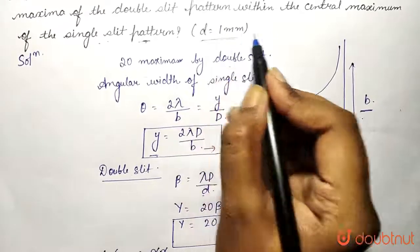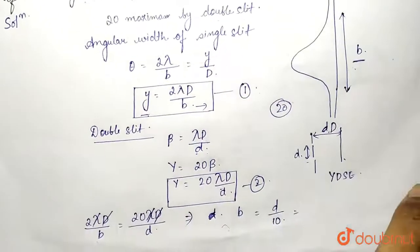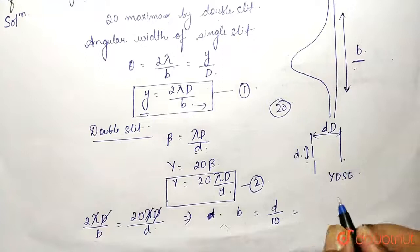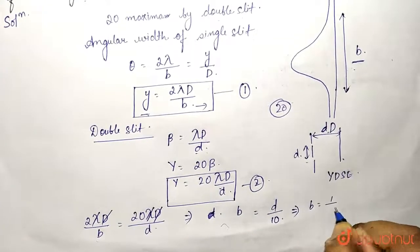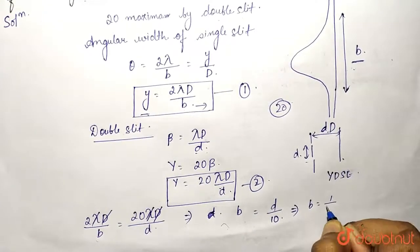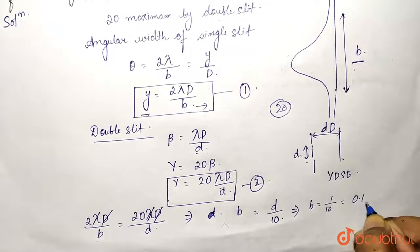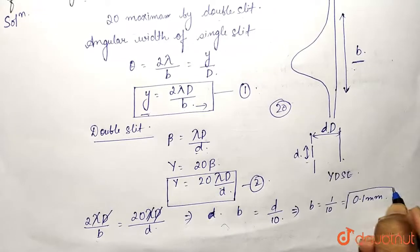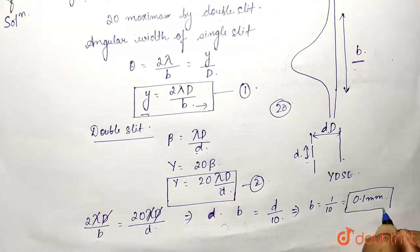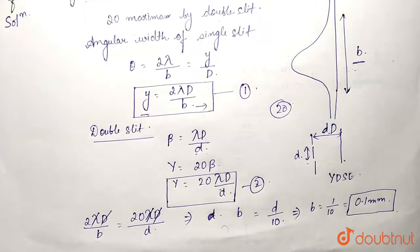In this question we have been provided the value of d which equals 1 mm. Therefore b = 1 mm / 10 = 0.1 mm. So this is the final answer — this should be the width of the central maxima of the single slit.